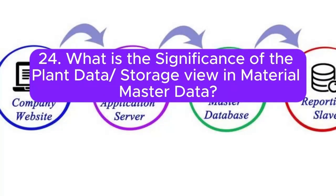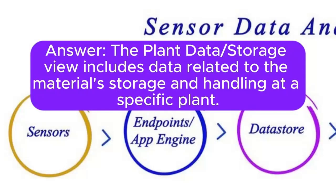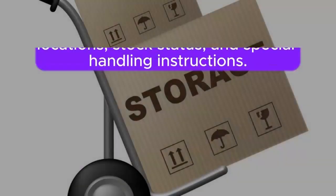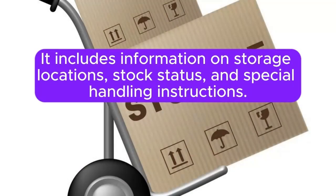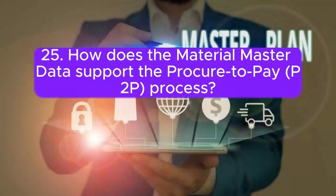Question 24: What is the significance of the Plant Data or Storage view in Material Master data? The Plant Data or Storage view includes data related to material storage and handling at a specific plant. It includes information on storage locations, stock status, and special handling instructions.